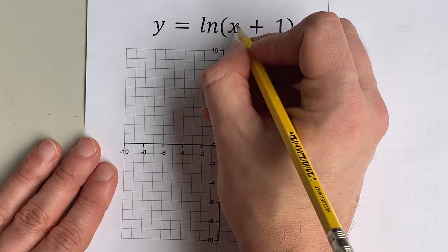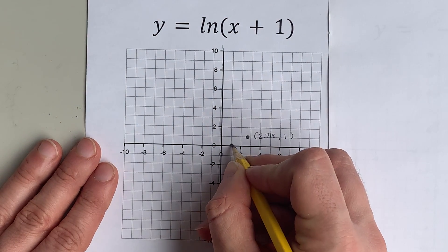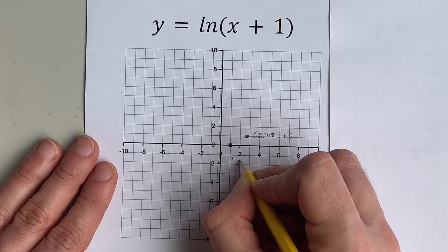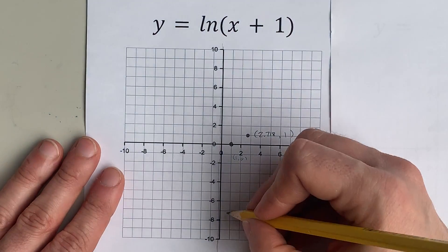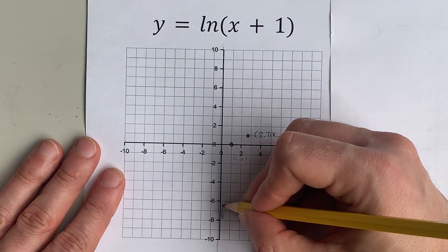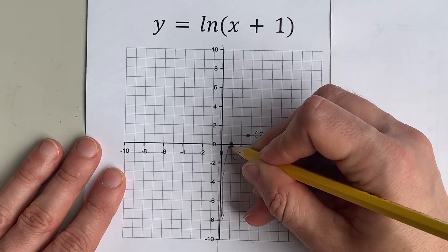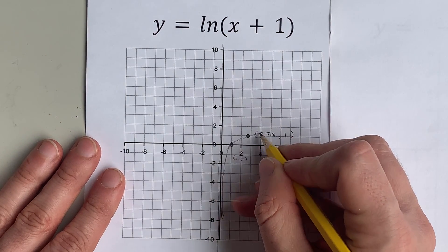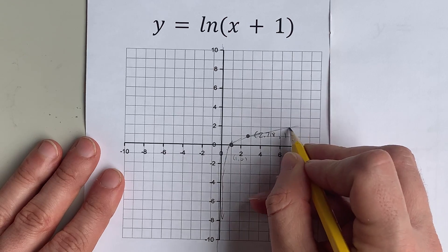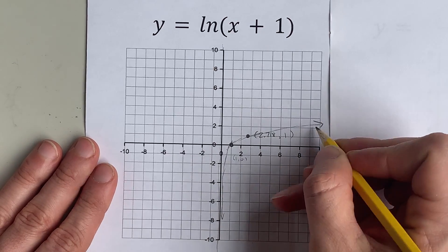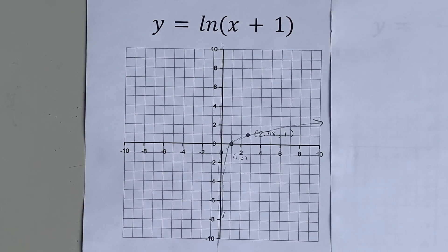And ln x has an x-intercept here at positive 1. So that's 1, 0. Now that curve, again, has a vertical asymptote here, needs to cut through that point, and flattens pretty quickly. If you've seen log graphs, it's going to look kind of like that.